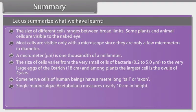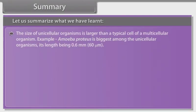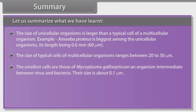Some nerve cells of human beings have a meter-long tail or axon. The single marine alga acetabularia measures nearly 10 centimeters in height. Prokaryotic cells usually range between 1 to 10 micrometers. Eukaryotic cells are typically larger, mostly ranging between 10 to 100 micrometers. The size of unicellular organisms is larger than a typical cell of a multicellular organism — for example, Amoeba proteus, the biggest unicellular organism, with a length of 0.6 mm or 60 micrometers. The size of typical cells of multicellular organisms ranges between 20 to 30 micrometers. The smallest cells are those of Mycoplasma gallisepticum, about 0.1 micrometer.